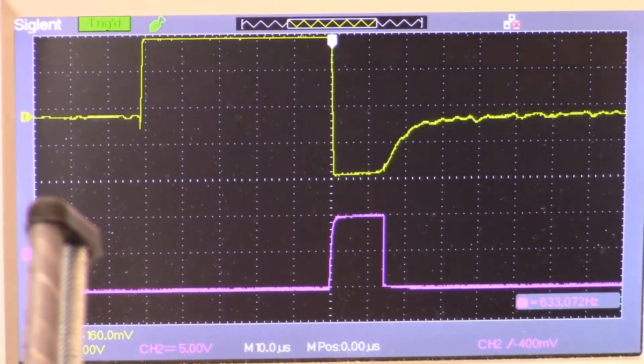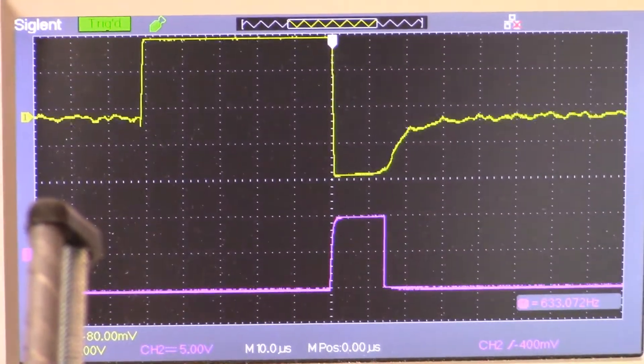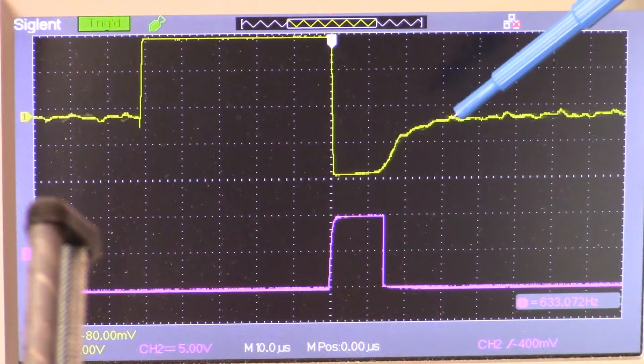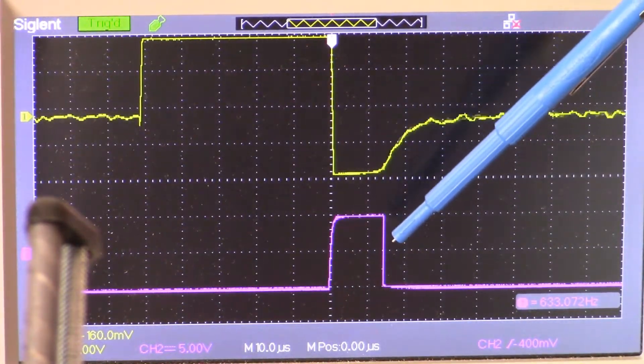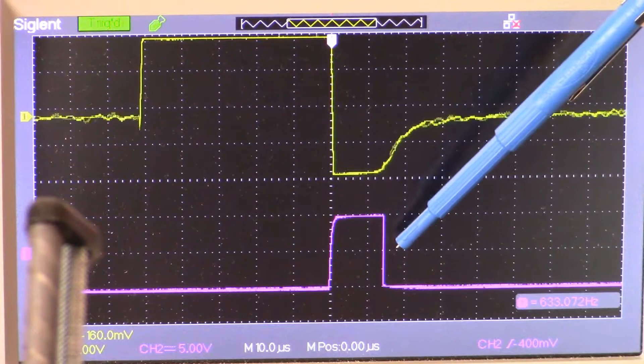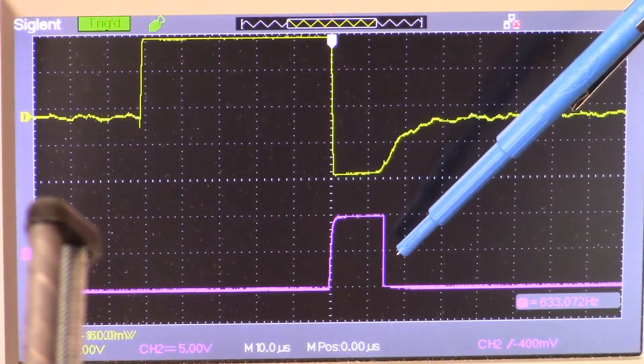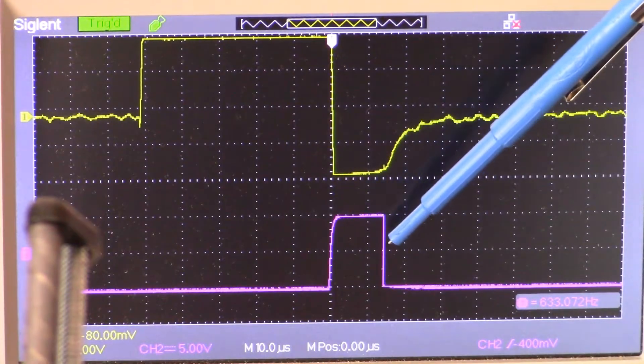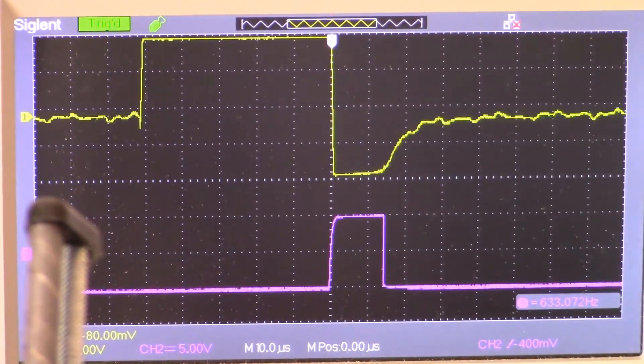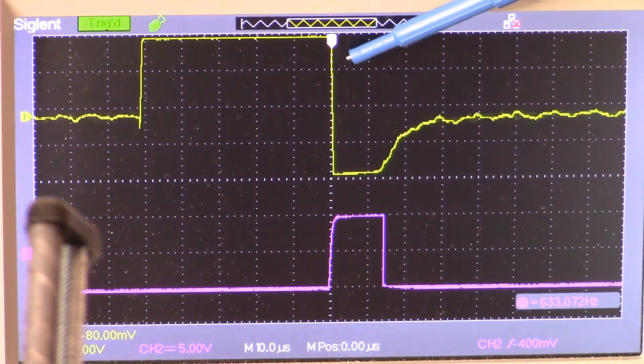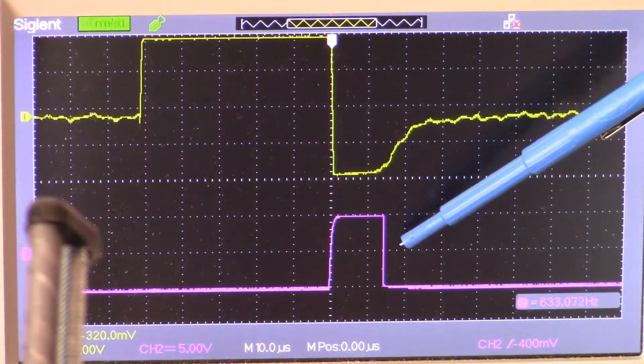What we have on the oscilloscope here: on channel one this is the output of the preamp, and channel two this is the sample pulse delay. This is test point two and this is test point one. These are the two actual physical test points that are on this board.